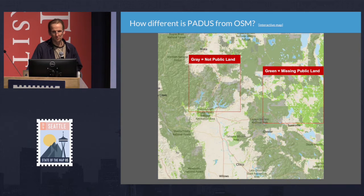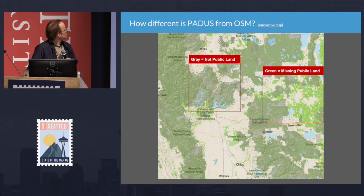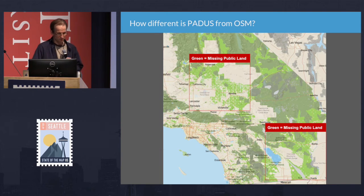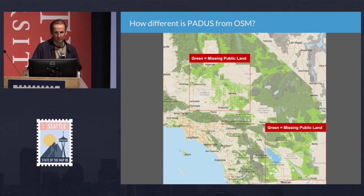We did a quick map for California showing how different PAD-US is from OSM. Some gray areas are lands marked as parks in OSM that as far as we know are not public land, and the bright green areas are public land in CPAD but not in OSM. Down near LA in the southern San Joaquin Valley there are a lot of missing public lands. Within well-mapped cities in OSM you're probably going to have a lot less missing, but some hinterland parks are missing — so there are definitely areas to improve park boundary data in OpenStreetMap.